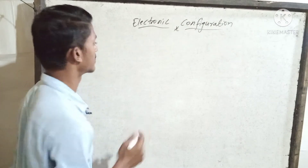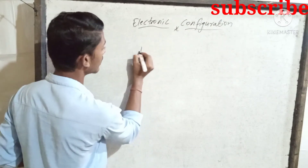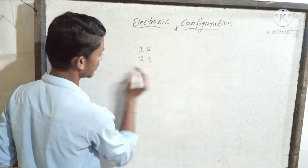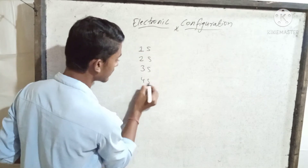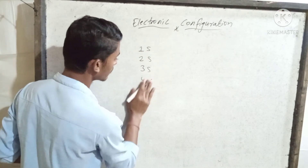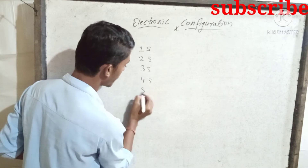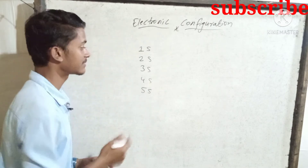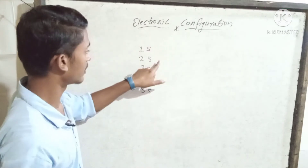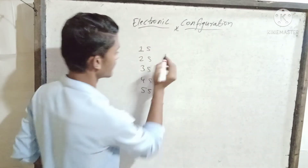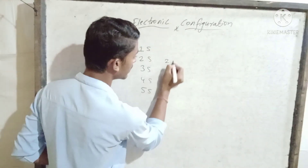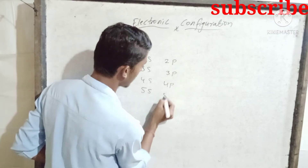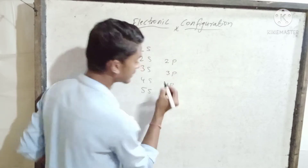First, we will learn the orbitals: 1s, 2s, 3s, 4s, 5s. We will learn how to do this. Then we will also cover 2p, 3p, 4p, 5p. Let's start now.